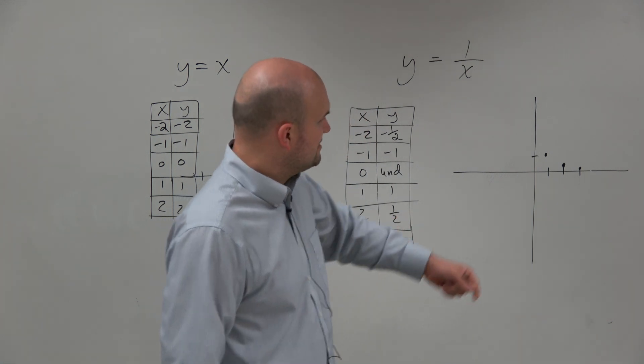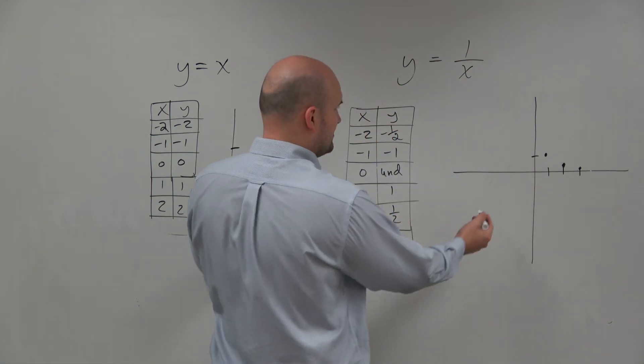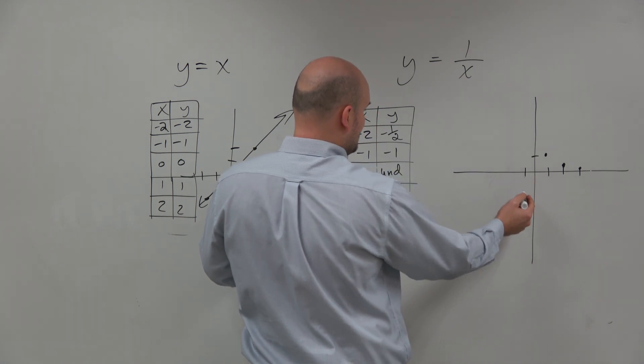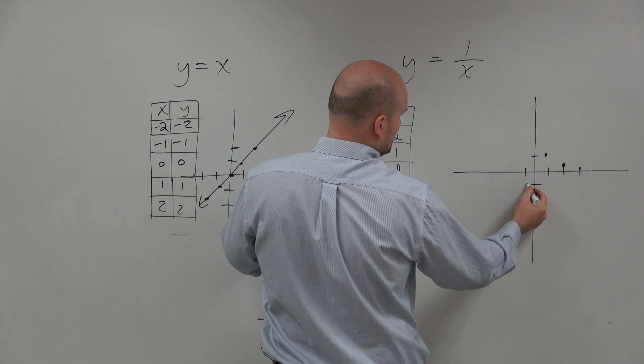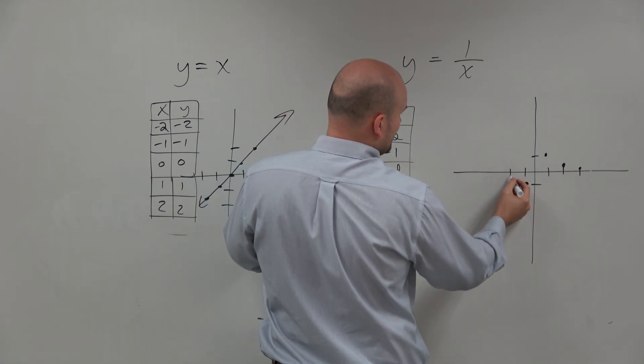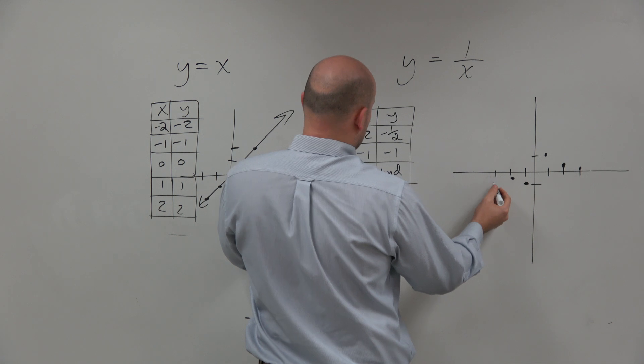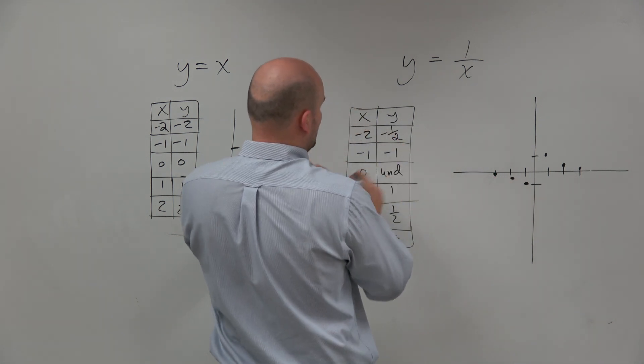But what we notice is it actually doesn't get lower than 0, because when we come around to the negative numbers, we get at negative 1, negative 1. At negative 2, we're dealing with negative 1/2 again.